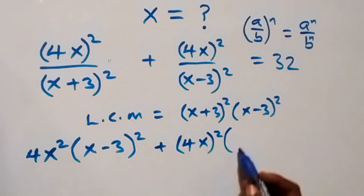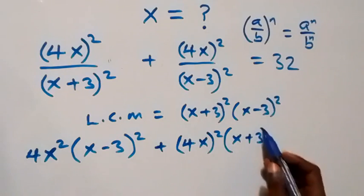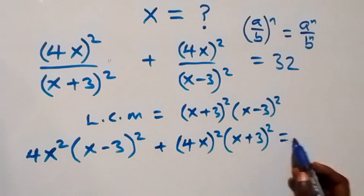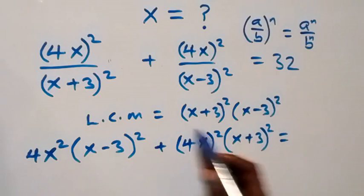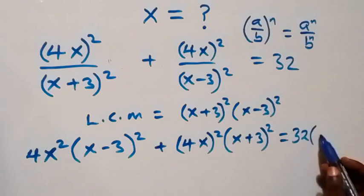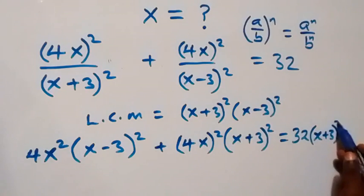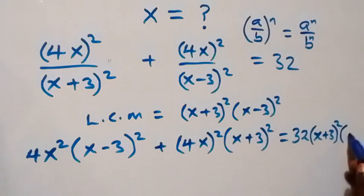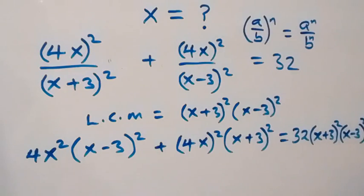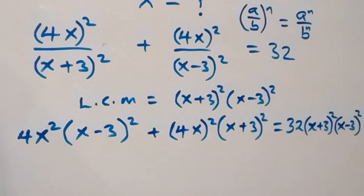Then plus we are left with 4x² into bracket (x+3)². On the right-hand side we multiply 32 by (x+3)² times (x-3)². From here we can simplify further.